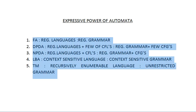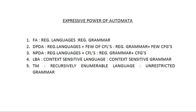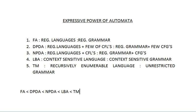This covers the different types of automata, the languages they accept, and the grammars they use. The expressive power ordering is: Finite Automata < DPDA < NPDA < LBA (Linear Bounded Automata) < Turing Machine. This is the hierarchy of expressive power in automata theory.